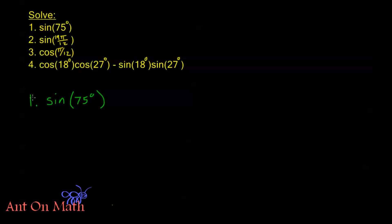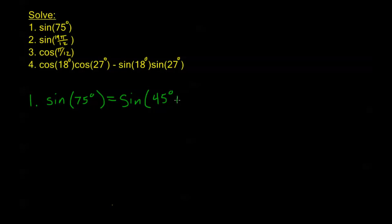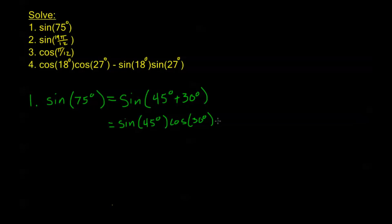75 is not too bad — we know that 75 is the same as 45 plus 30. So we can solve this using our sine addition formula. This is equal to sine of 45 times cosine of 30, and remember with sine when we're adding in the argument we add the two terms, so plus cosine of 45 times sine of 30.